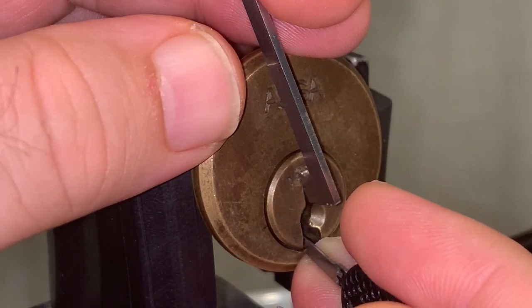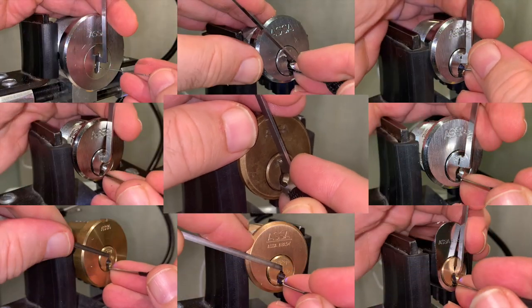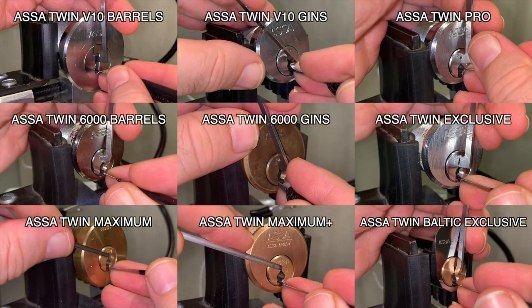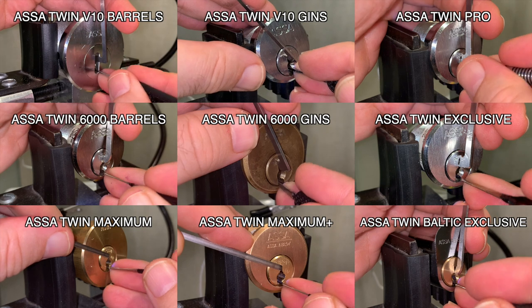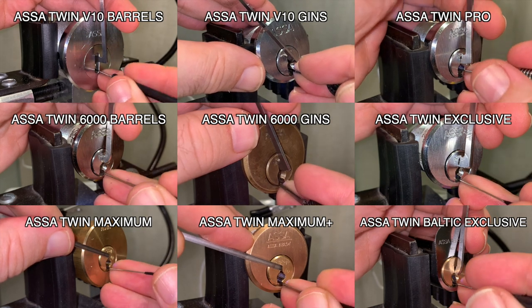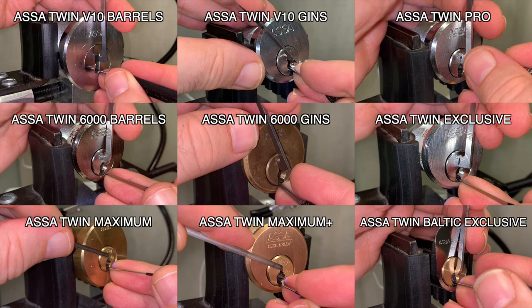The ASSA twins are comprised of 7 models and 9 distinct variations. When the pin tumbler drivers are all at shear and the sliders are aligned to allow the sidebar to retract, the lock will open.